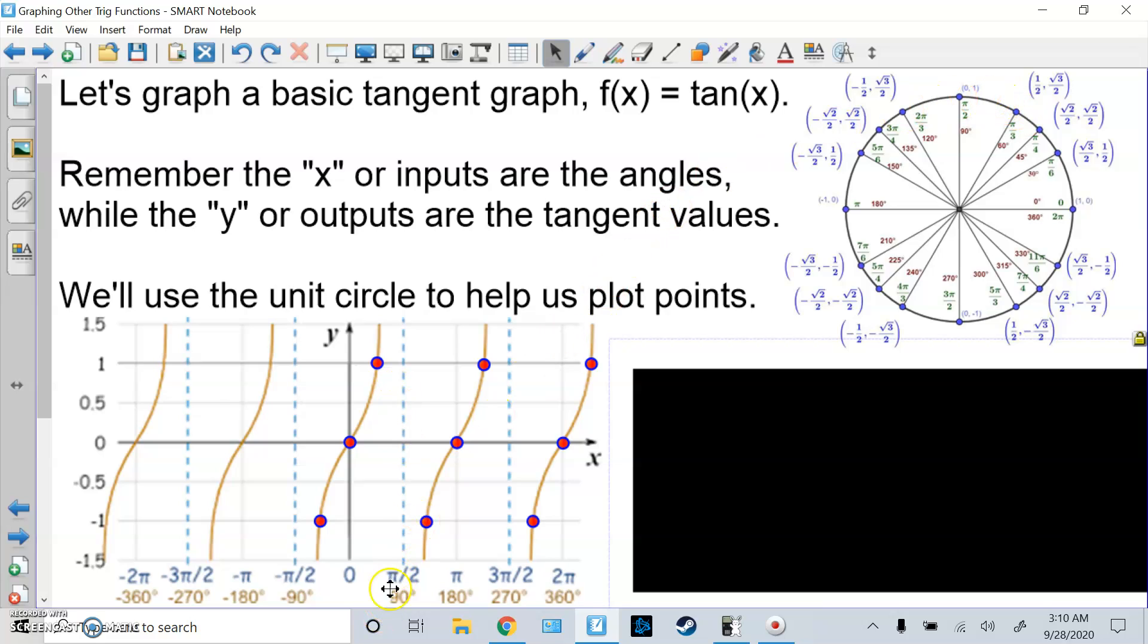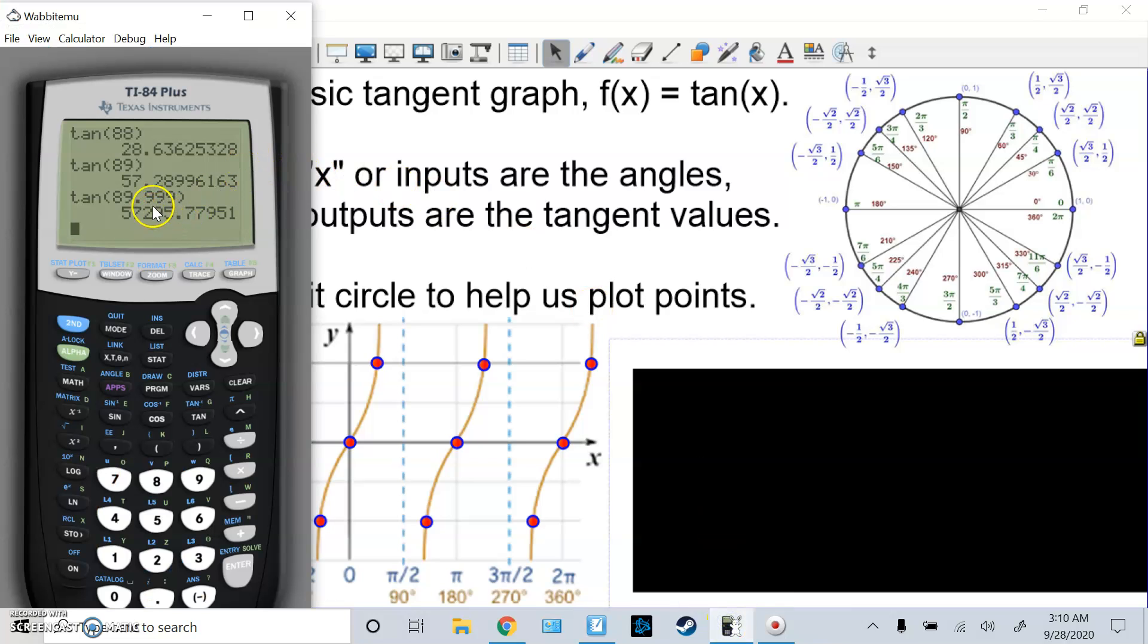But I get in trouble at pi over 2 or 90 degrees. If I do y over x, 1 divided by 0, that's undefined. Look what happens when I get really close. So I do 88 degrees, 89 degrees, and 89.999 degrees. So I get 28, then 57, then 57,295.